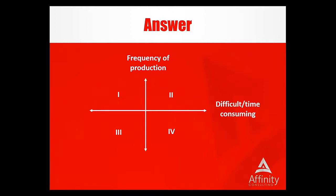Quadrant one covers easy documents you do every day — something like a fax cover sheet. Even saving 10 to 30 seconds every time adds up after a while if you're doing it constantly. The big quadrant that's really good for automation is quadrant two: documents you're producing all the time that are also difficult and time-consuming. These would be more transactional kinds of documents — they're fairly defined, you've got the same type of language you're using over and over again.